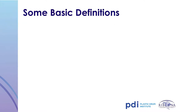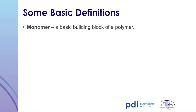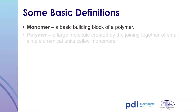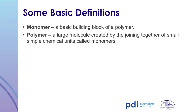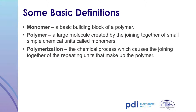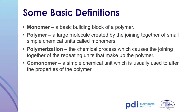It may be helpful to review some basic definitions related to the manufacture and use of polyethylene. A monomer is the basic building block of a polymer. Monomers are combined to form a polymer through a process called polymerization. A co-monomer is a second type of monomer that can be added during polymerization to modify the resin's physical properties. Butene and hexene are commonly added co-monomers.